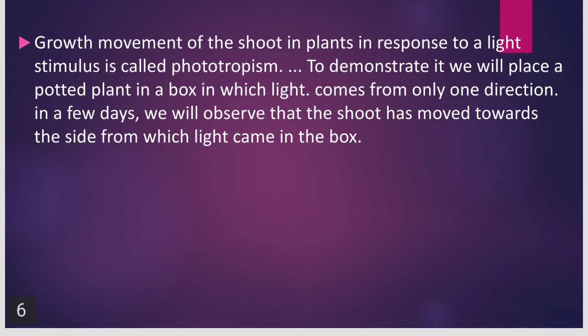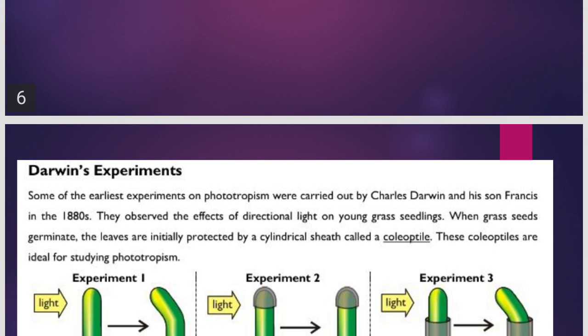Growth of the shoot in plants in response to a light stimulus is called phototropism — that is when the plant is growing in response to light. If you keep the plant near the window, you will observe that the stem will try to come out of the window and bend towards the sunlight. To demonstrate it, we place a potted plant in a box in which light comes from only one direction for a few days. We will observe that the shoot has moved towards the side from which the light came. That is called phototropism.